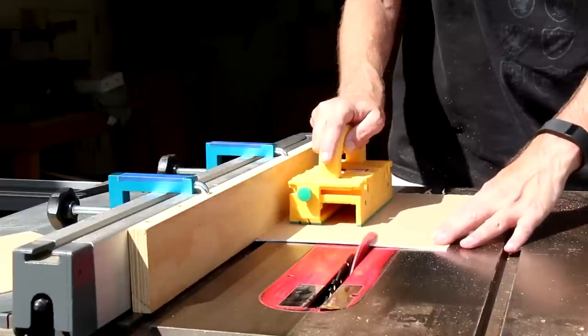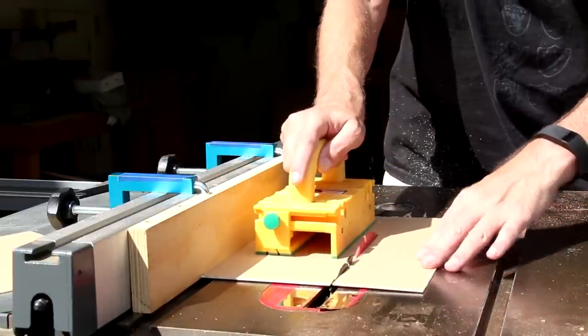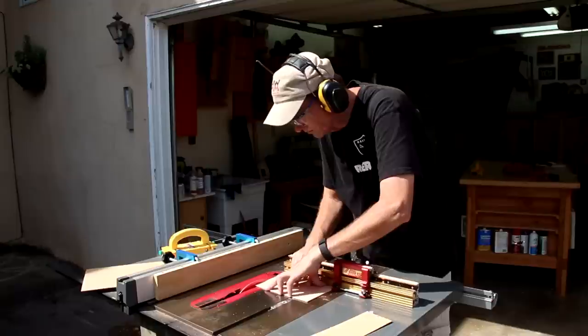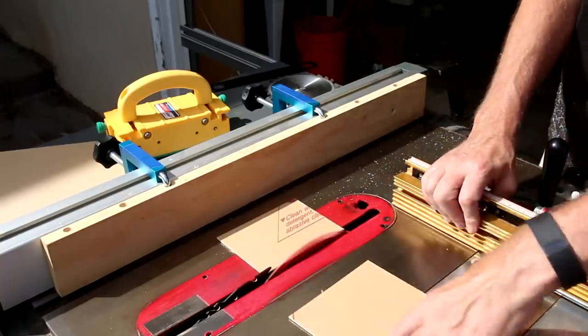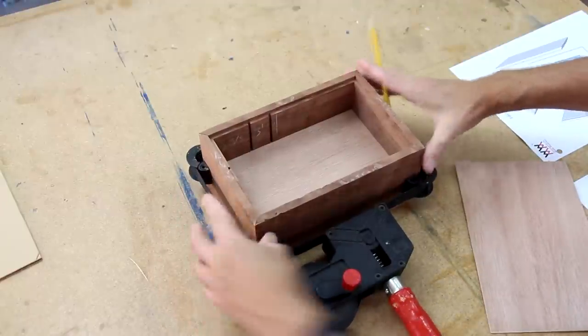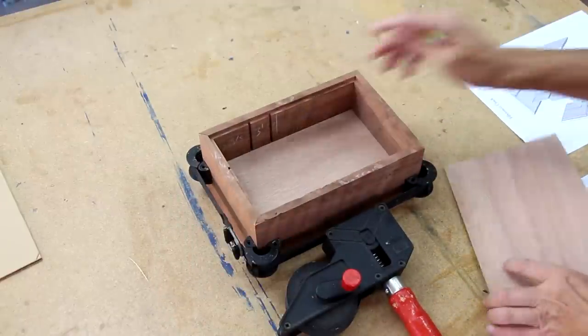This is a real thin sheet of translucent acrylic. It cuts real easily on the table saw.